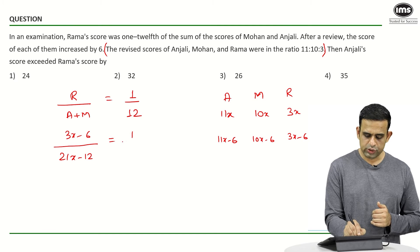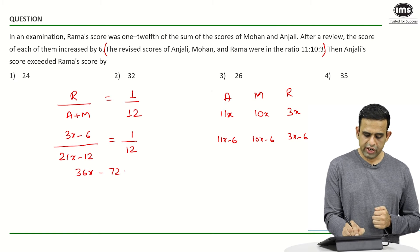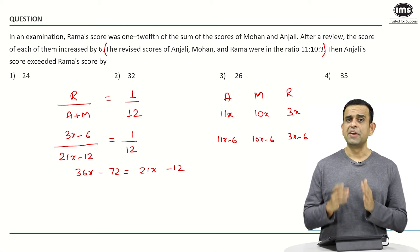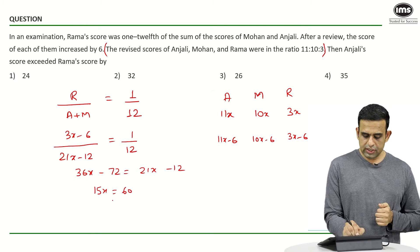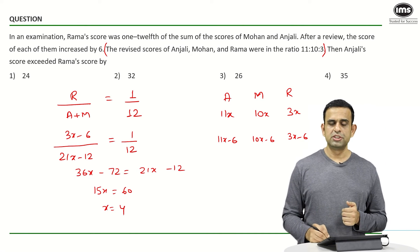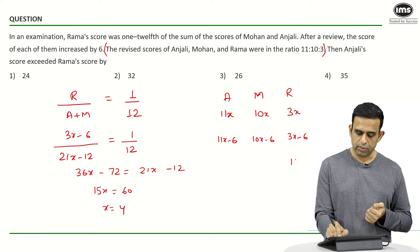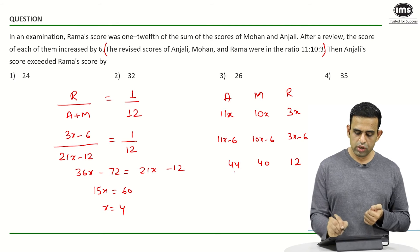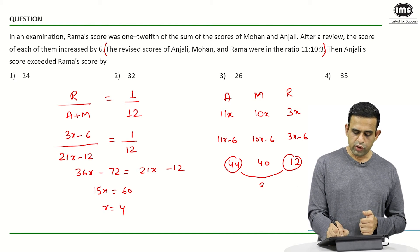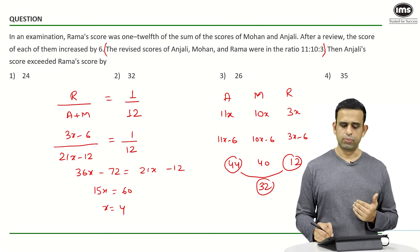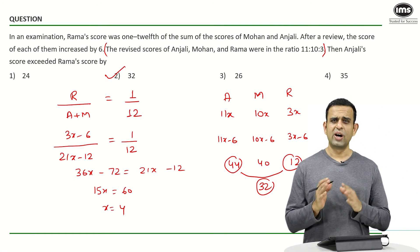Cross-multiplying gives 36x minus 72 equals 21x minus 12. Bringing x to one side gives 15x equals 60, so x equals 4. With x equal to 4, the post-review scores of Anjali, Mohan, and Rama become 44, 40, and 12 respectively. Anjali's score exceeds Rama's score by 44 minus 12, which is 32. So again the answer is option number 2.